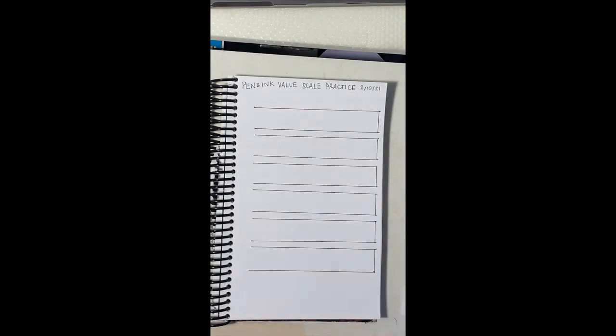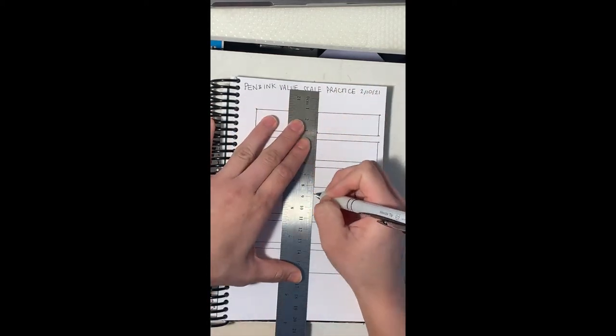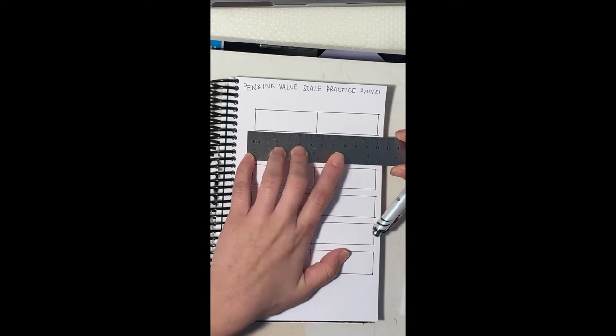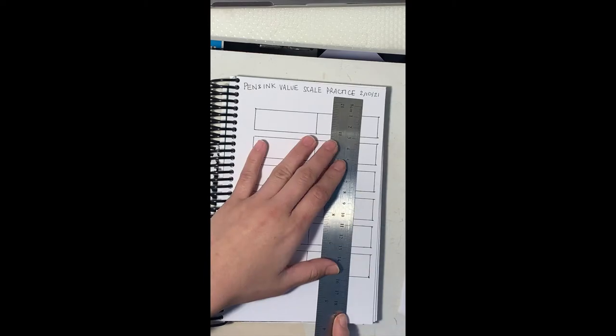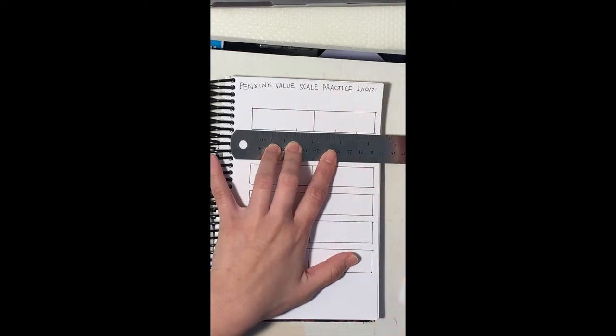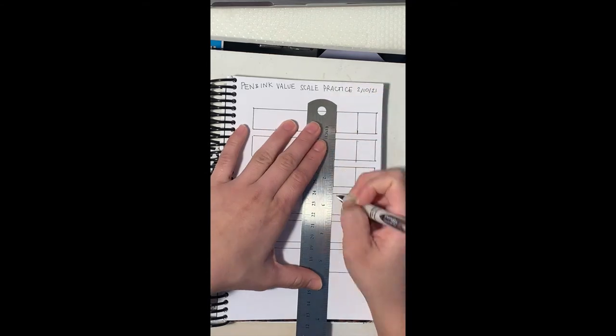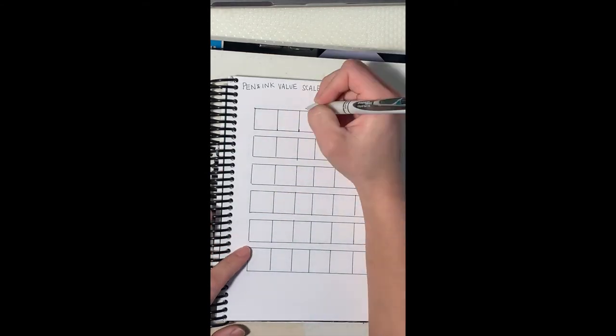I was really trying to measure everything precisely, but if you have six boxes that are relatively even, the main idea of this is to get the value scale practice, not the measuring practice. Mine aren't a hundred percent even.